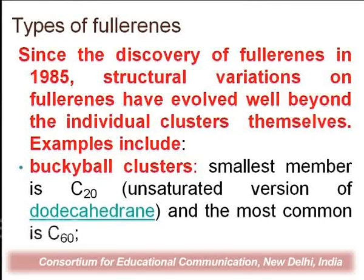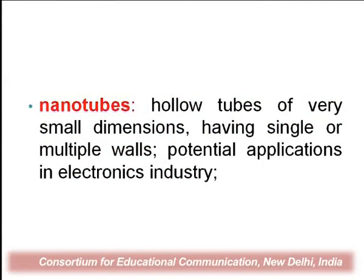There are different types of fullerene. When fullerene was discovered in 1985, many variations were formed. The first type is the bucky ball cluster — the smallest member being C20, which is unstable. The fullerene family ranges from C20 to C540, and the most common version is C60. The second type is nanotubes — hollow tubes with very small diameters, formed as single or multiple walls in open or closed configurations.